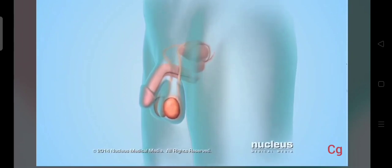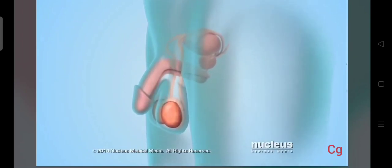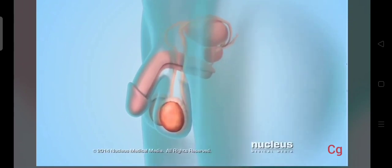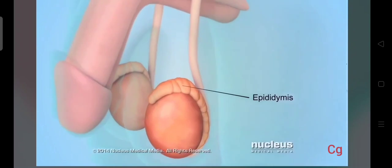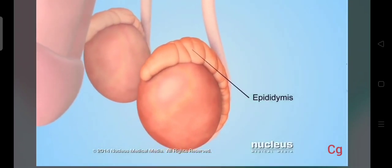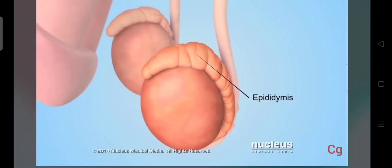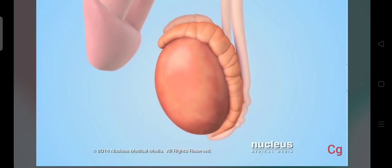The scrotum is outside the body, which keeps the testicles cool enough to make sperm. Connected to each testicle is a mass of coiled tubes called the epididymis. Each epididymis stores immature sperm while they continue to develop.